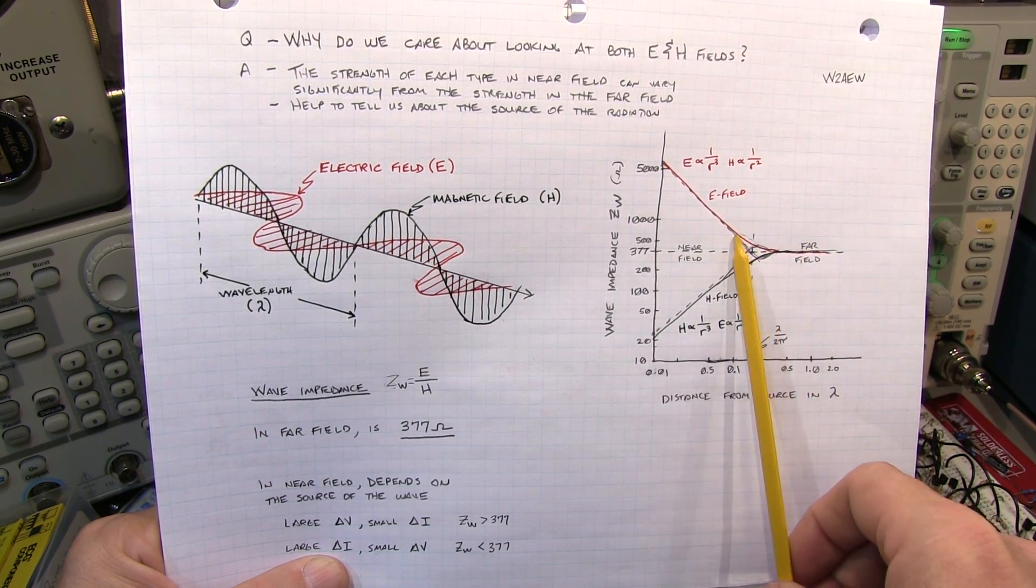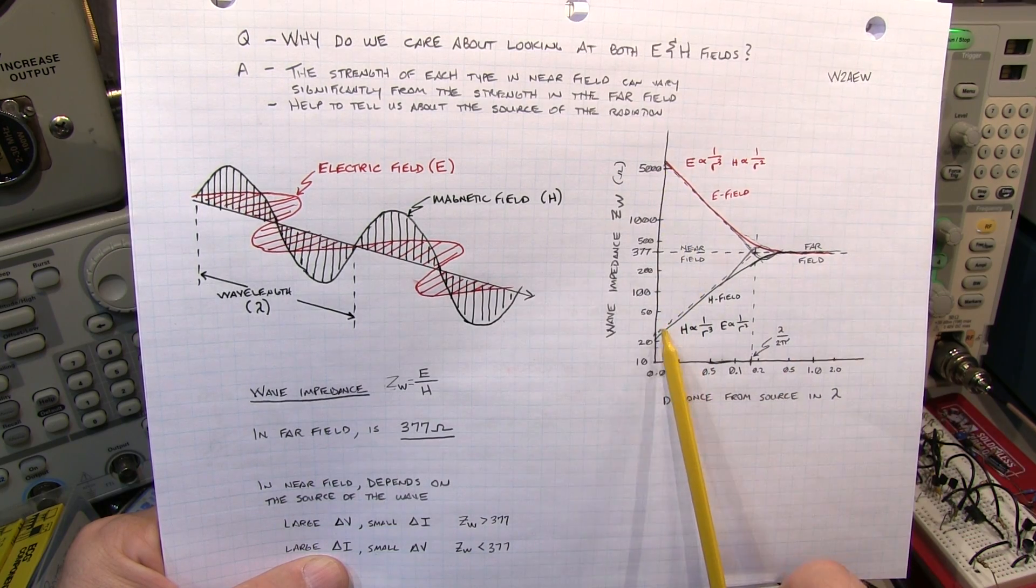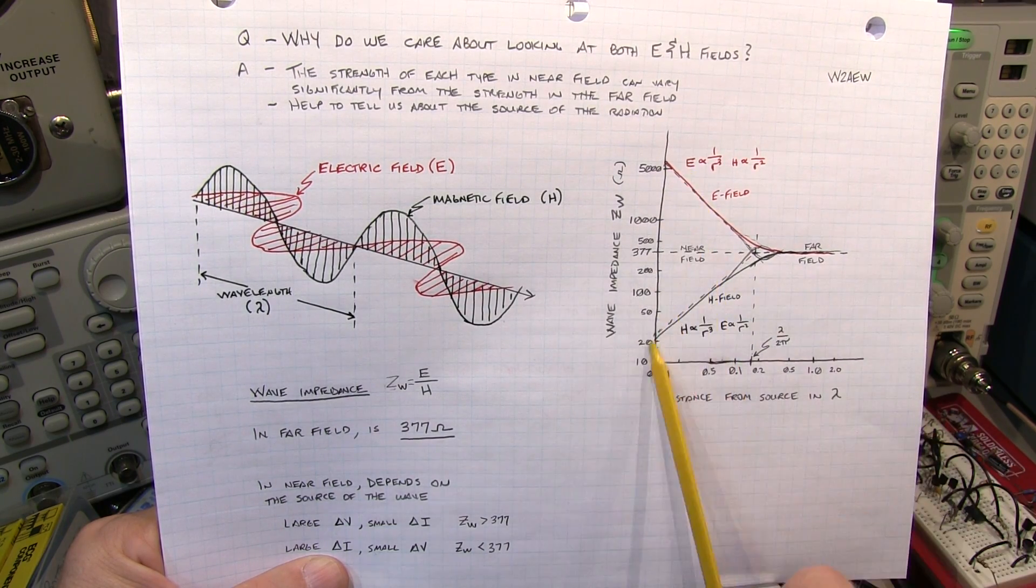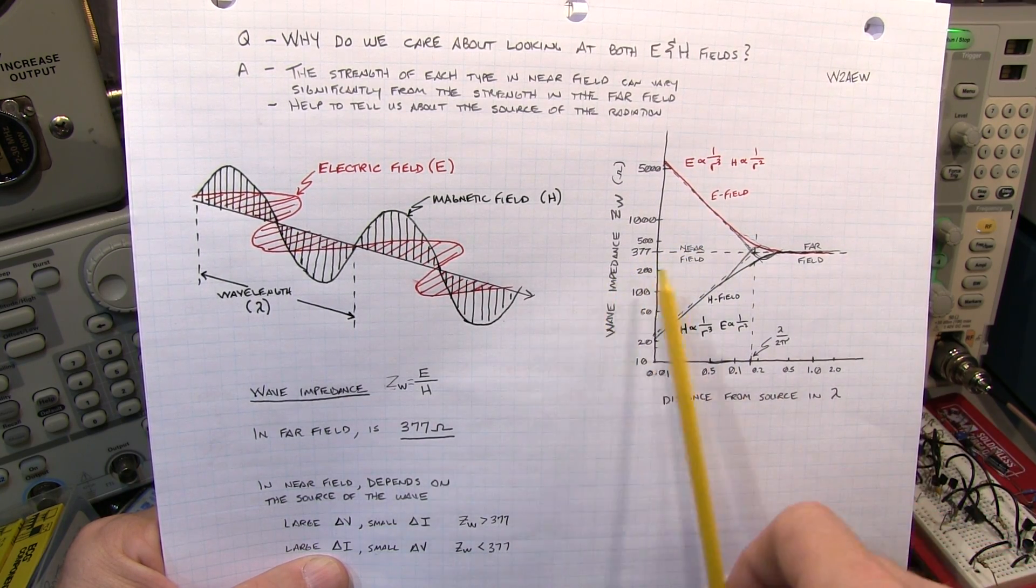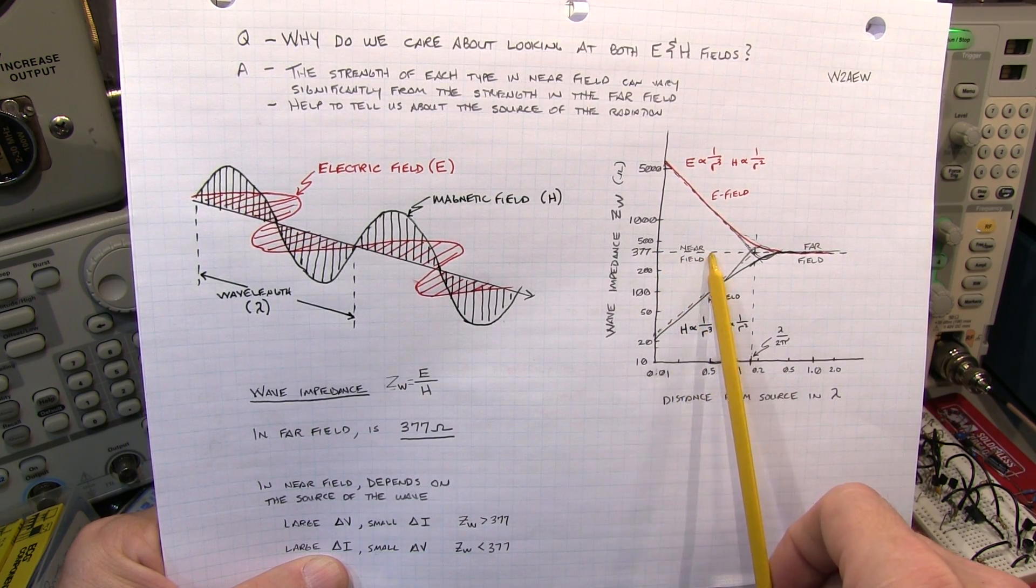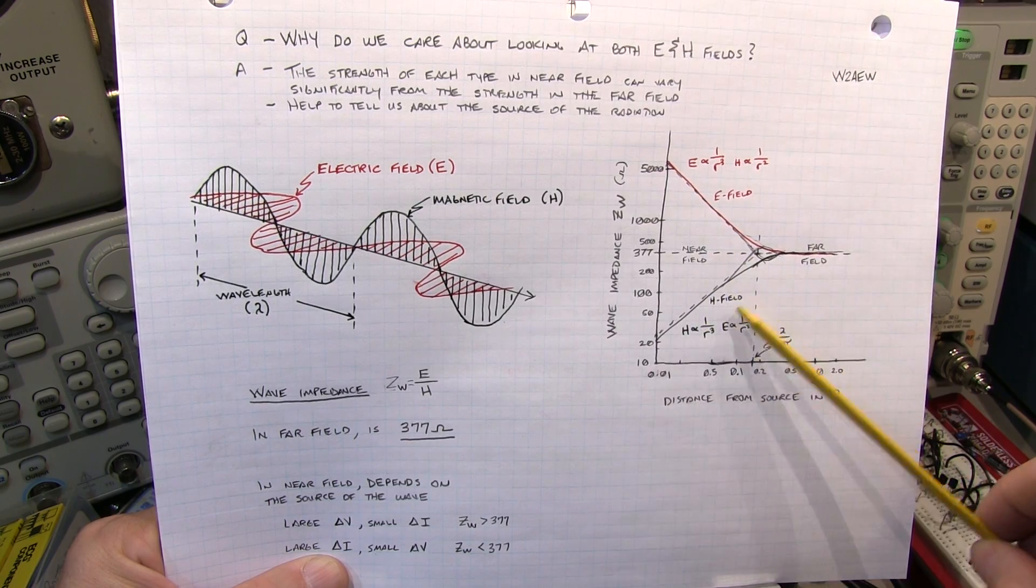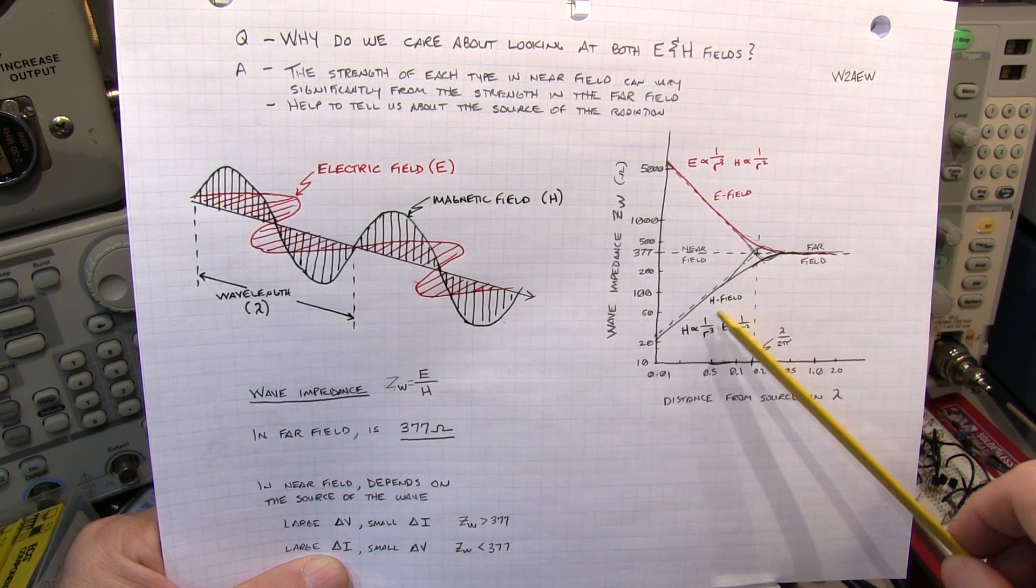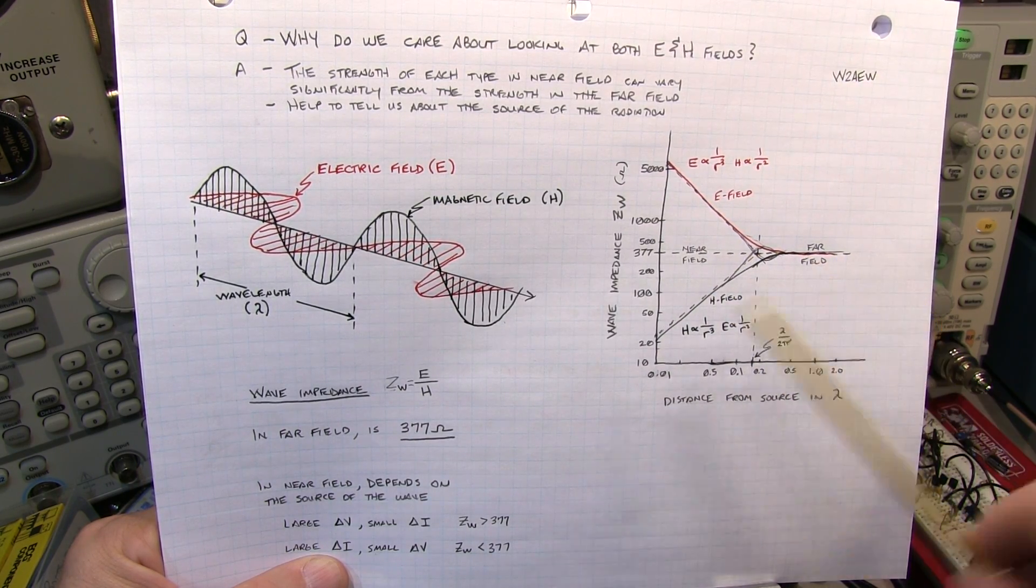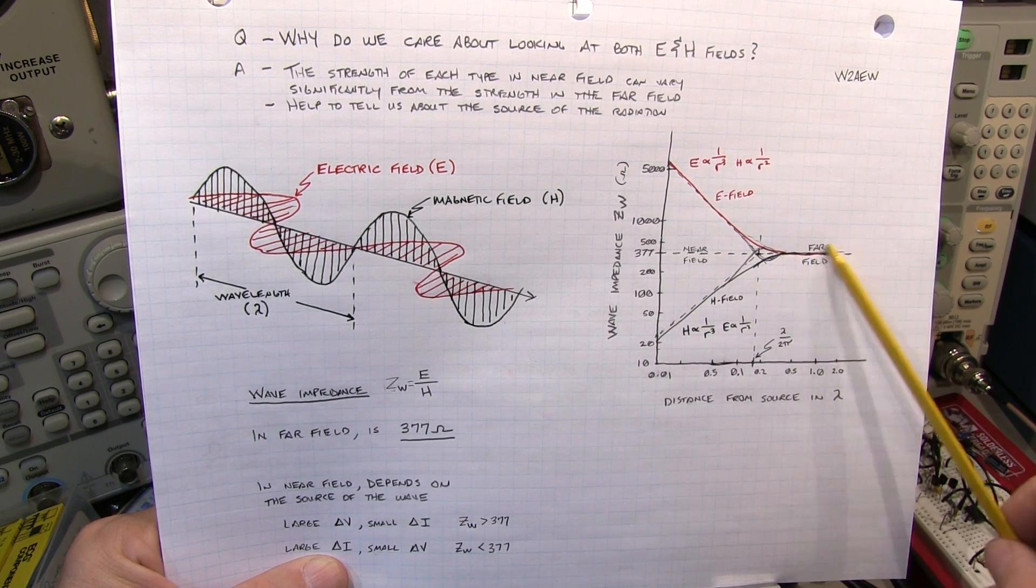So as we get closer and closer to the circuit under test, the E field or the H field might be stronger. And as you get further and further away from the device under test, those fields will change at different rates as we get further from the device until they converge at this 377 ohm relationship in the far field.